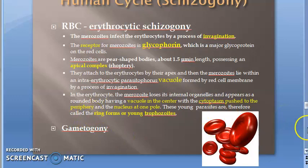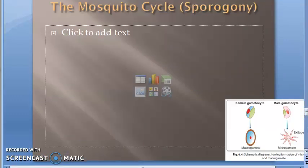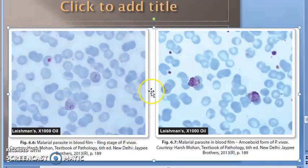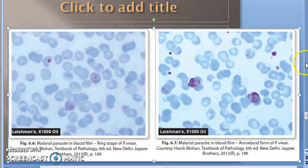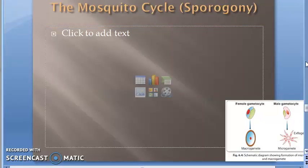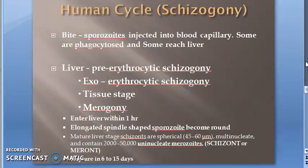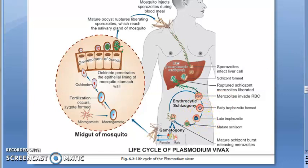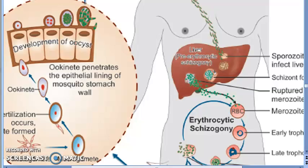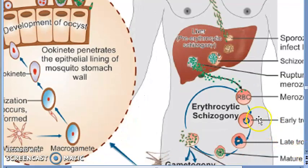These are called ring forms or young trophozoites. Looking at the diagram, inside the RBC you can see the merozoite has made a vacuole in the center, the cytoplasm is at the periphery, and the nucleus is pushed to one pole — giving it the appearance of a ring.